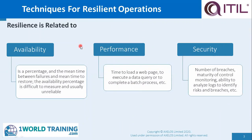Resilience is related to the following: availability, performance, and security. Availability is a percentage, and includes mean time between failures and mean time to restore. The availability percentage is difficult to measure and usually unreliable. Performance covers time to load a web page, to execute a data query, or to complete a batch process, etc. Security covers number of breaches, maturity of control monitoring, ability to analyze logs to identify risks and breaches, etc.